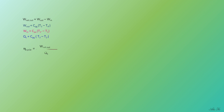The work ratio is defined as net work output over gross expansion work (turbine work output). In this standard constant pressure cycle there is only one turbine, unlike the open gas turbine unit which may have more. To find power output, multiply the net work output by the mass flow rate ṁ, where ṁ is in kg/s.